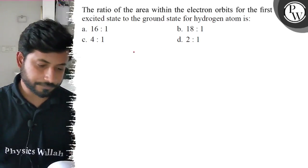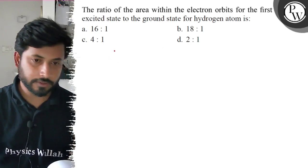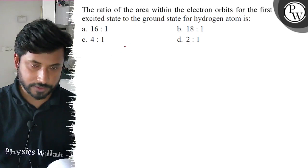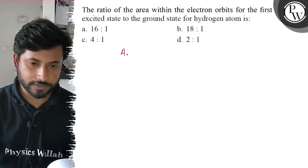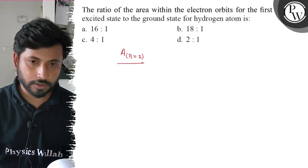Okay guys, so this is the ratio of area of electron orbits: first excited state to ground state. Area of first excited state, that is n equals to 2, or ground state area, that is n equals to 1.